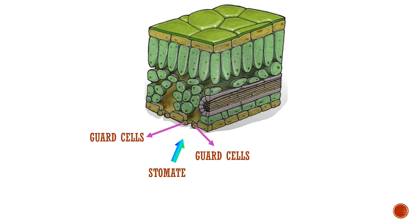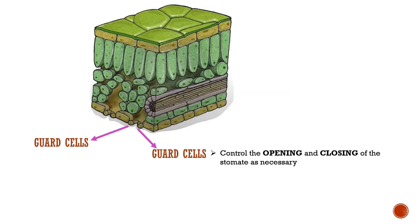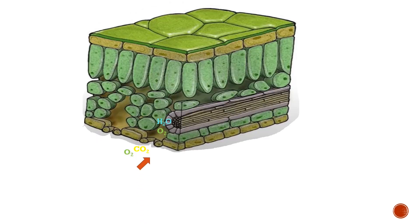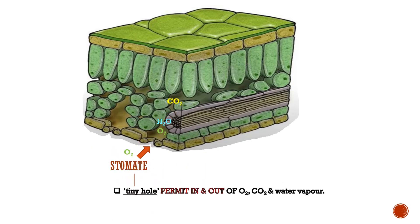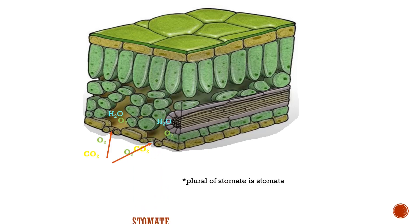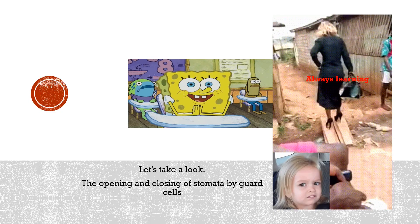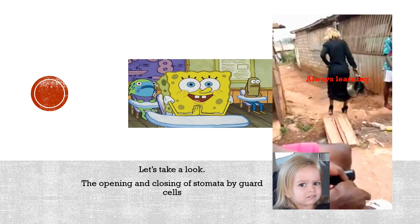The guard cell controls the opening and closing of the stoma. The stoma is a tiny hole that permits the in and out movement of oxygen, carbon dioxide, and water vapor. Remember, the plural for stoma is stomata.